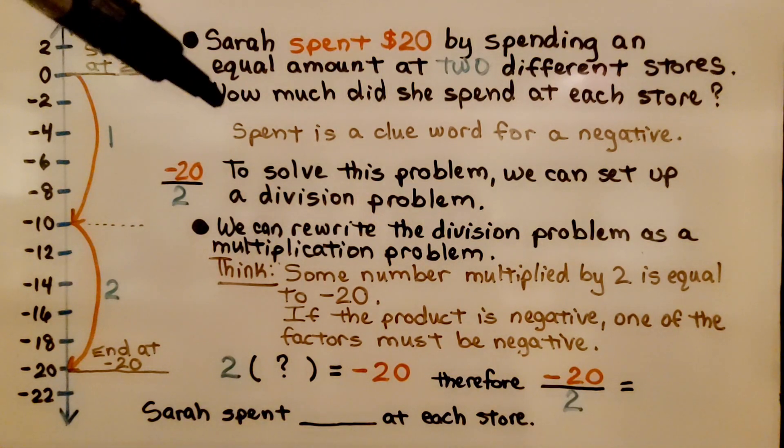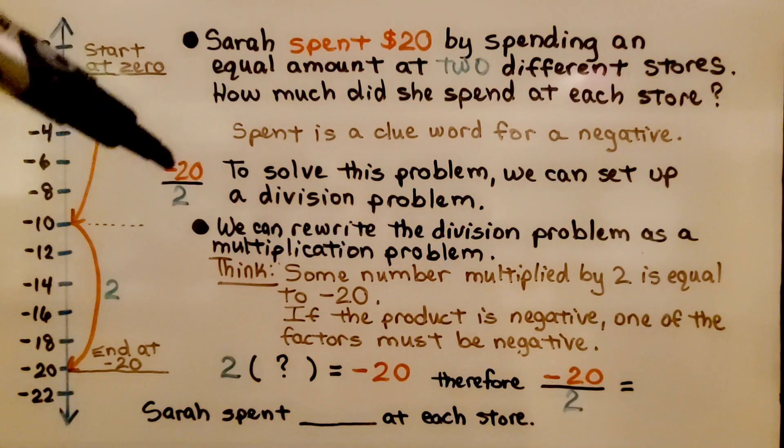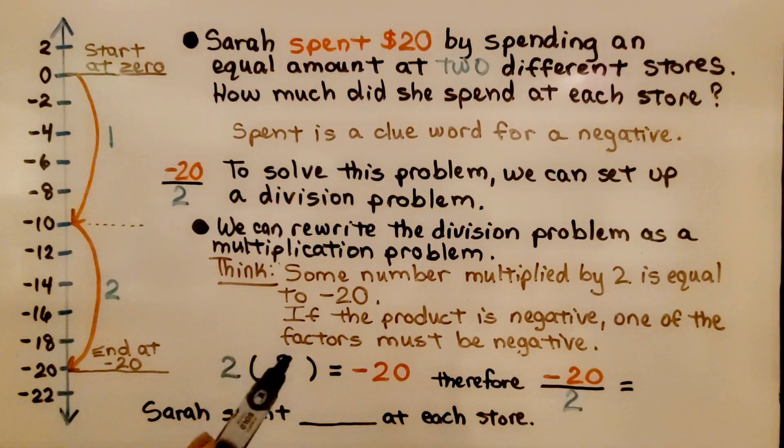To solve this problem, we can set up a division problem. We can write it as a fraction as a division problem. We can rewrite the division problem as a multiplication problem. We think some number multiplied by 2 is equal to negative 20. As the product is negative, one of the factors must be negative. Because if this is positive and that's a negative, this needs to be a negative so they have unlike signs to make that a negative.